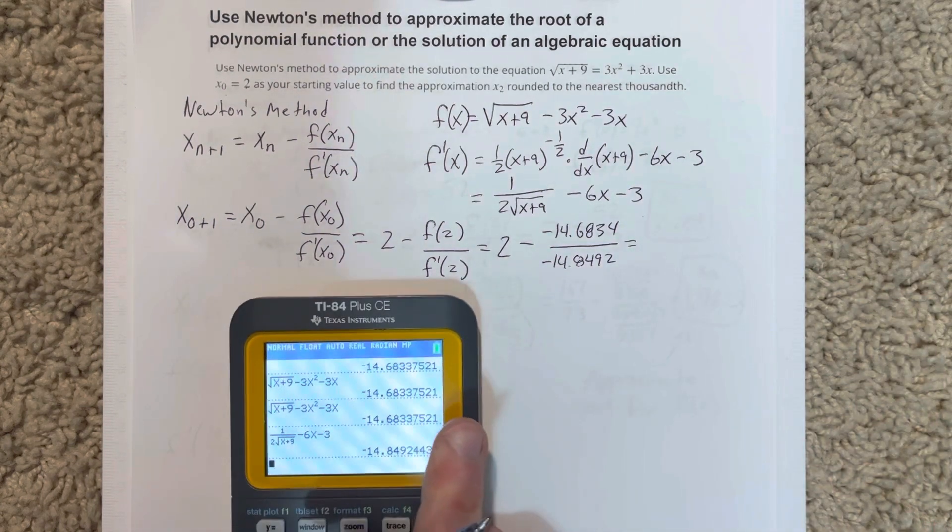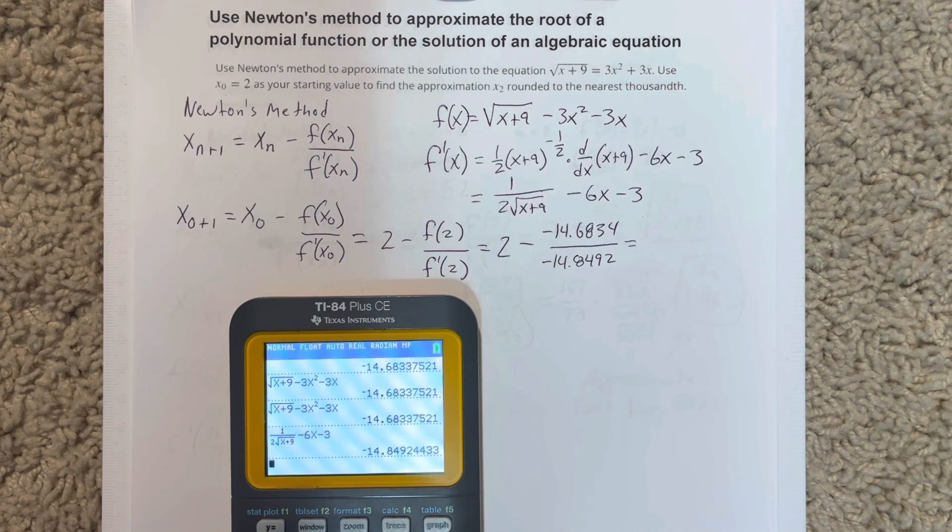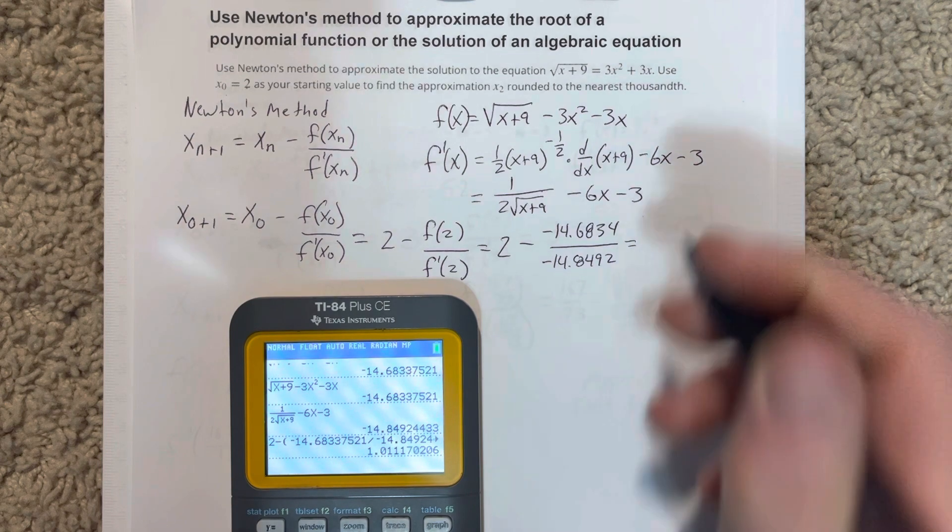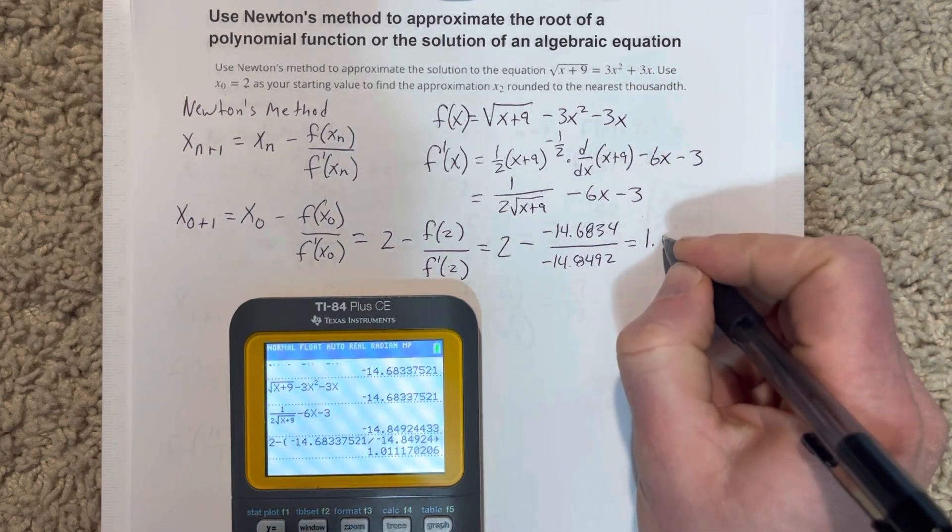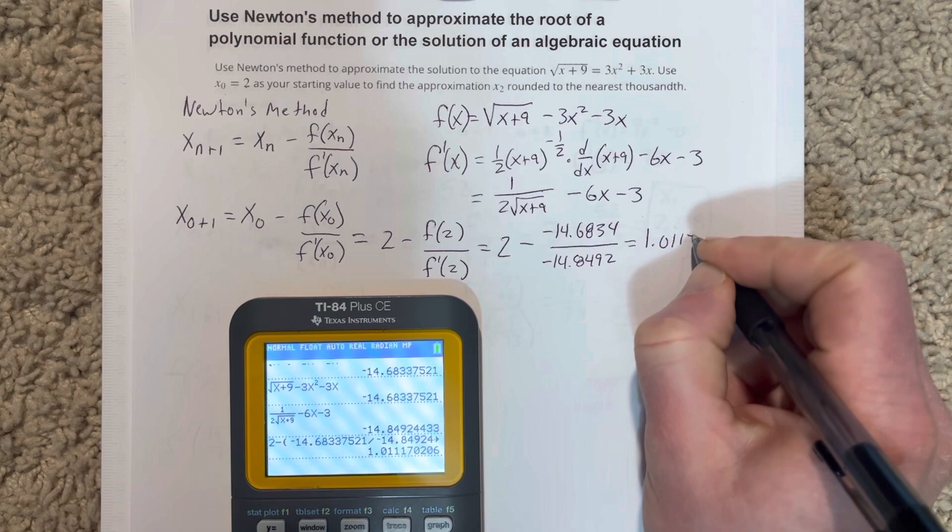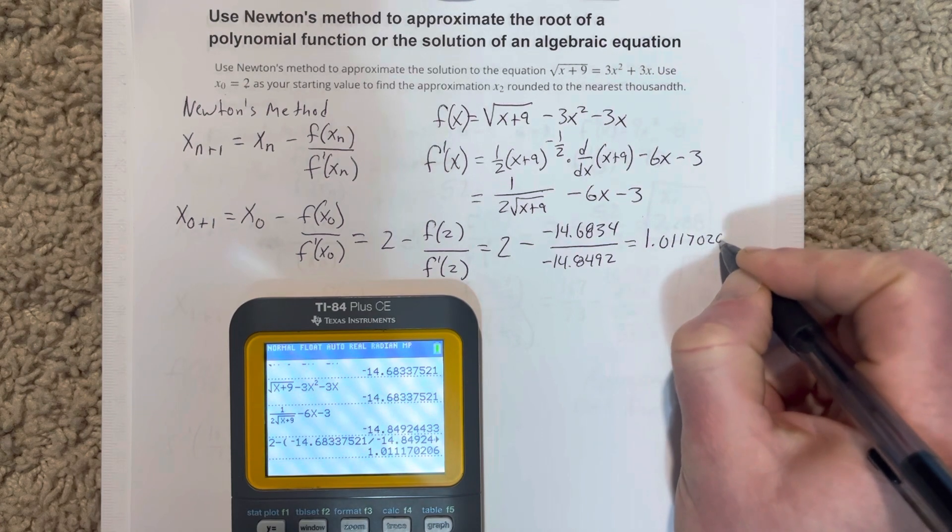Then we're going to take and we're going to subtract those. We're going to do 2 minus parenthesis, this number, divided by this number. We have 1.01170206.